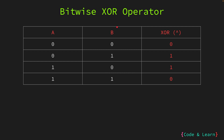Hello everyone, welcome to part 2 of our bitwise logical operators in Go lesson. Let's continue with the bitwise logical operators. The next operator we have is the XOR operator, also represented with a caret sign. The XOR operator, represented by a caret symbol, sets the resultant bit if one bit is set and the other is not, or if one bit is 1 and the other bit is 0.